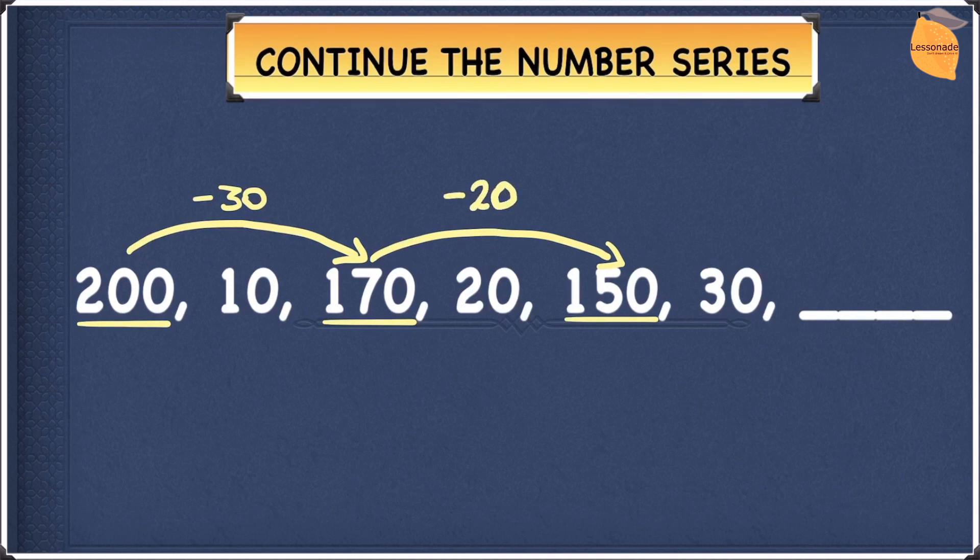We can already see a pattern emerging. It's going minus 30 and minus 20. This means if it does continue this way, the next one should be minus 10 because it's decreasing by 10 every time. From 30 to 20 you take away 10, and from 20 to 10 you take away 10. So it's going down by 10.